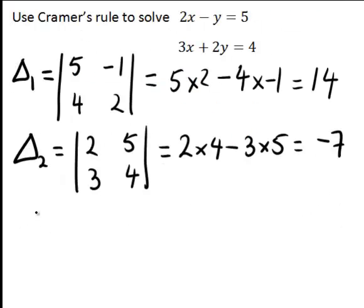And then delta is just the coefficients of the unknowns, so in this case 2, 3, negative 1, 2.